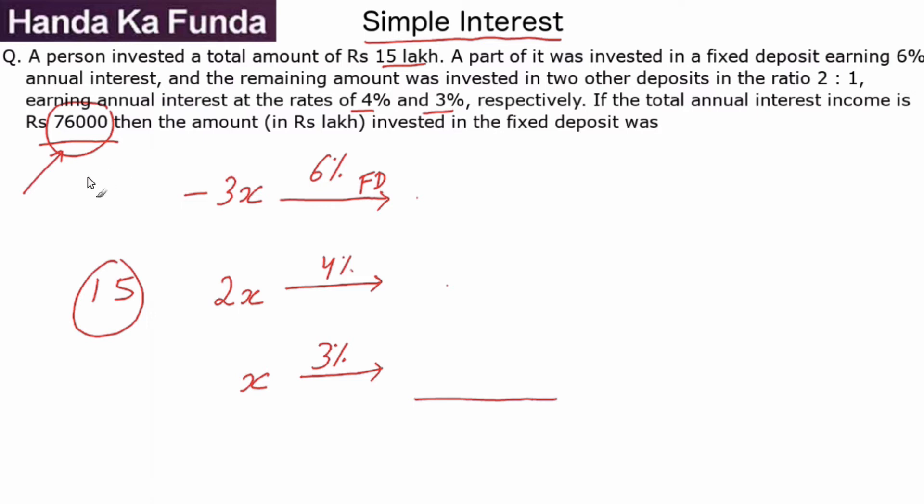For the rest of the question I am considering everything in thousands, which means my total interest was 76,000 and the total money borrowed was not 15 lakhs but 1,500 thousand.